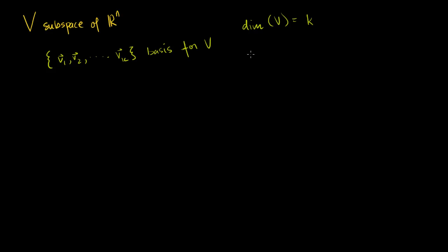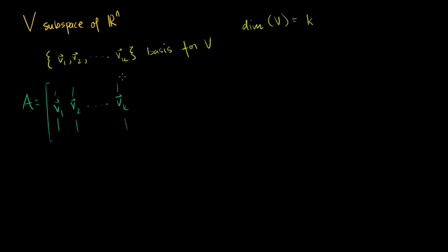Now let's think about the orthogonal complement of V. To do that, let's construct a matrix A whose column vectors are these basis vectors. The first column is v1, the second is v2, and you go all the way to vk.